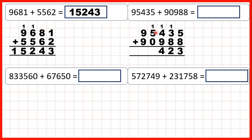1 plus 5 plus 0 is 6, and 9 plus 9 is 18. So our answer is 186,423.